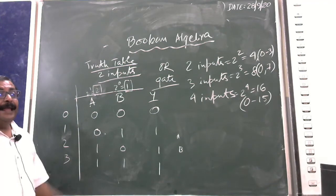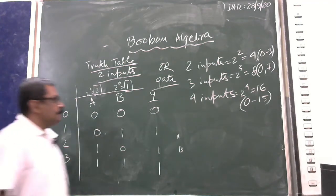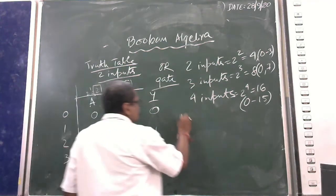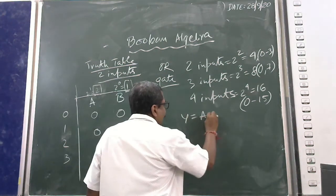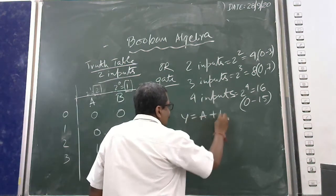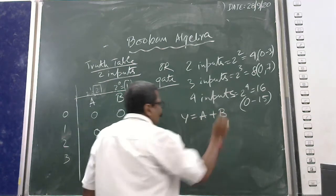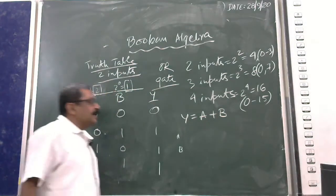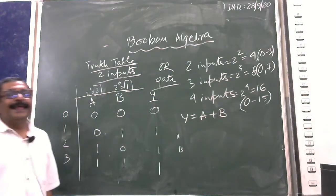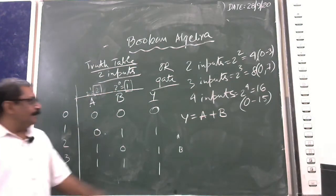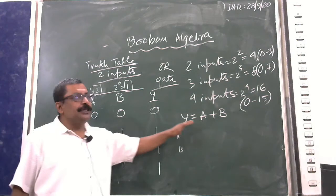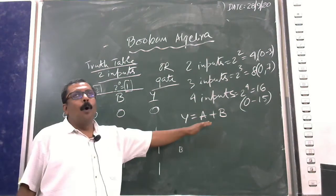Here is the expression for the OR gate: Y is equal to A + B.